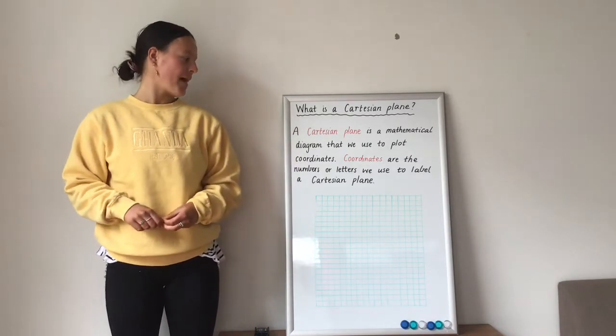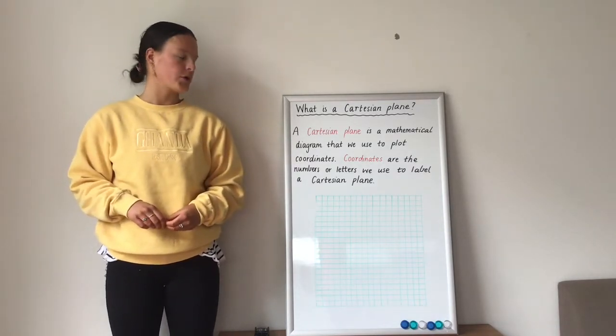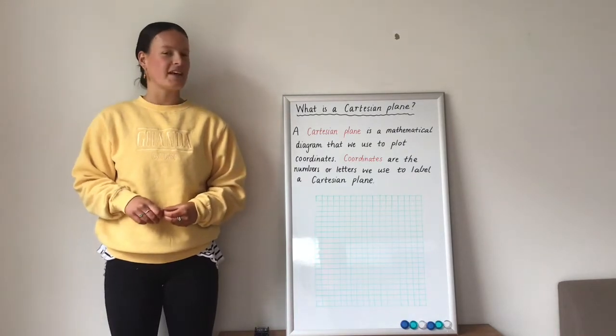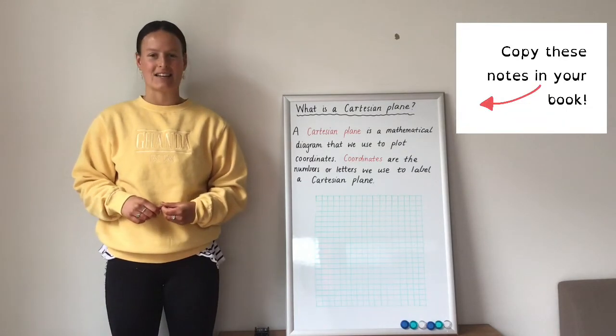Well, a Cartesian plane is a mathematical diagram that we use to plot coordinates. Coordinates are the numbers or letters we use to label our Cartesian plane.